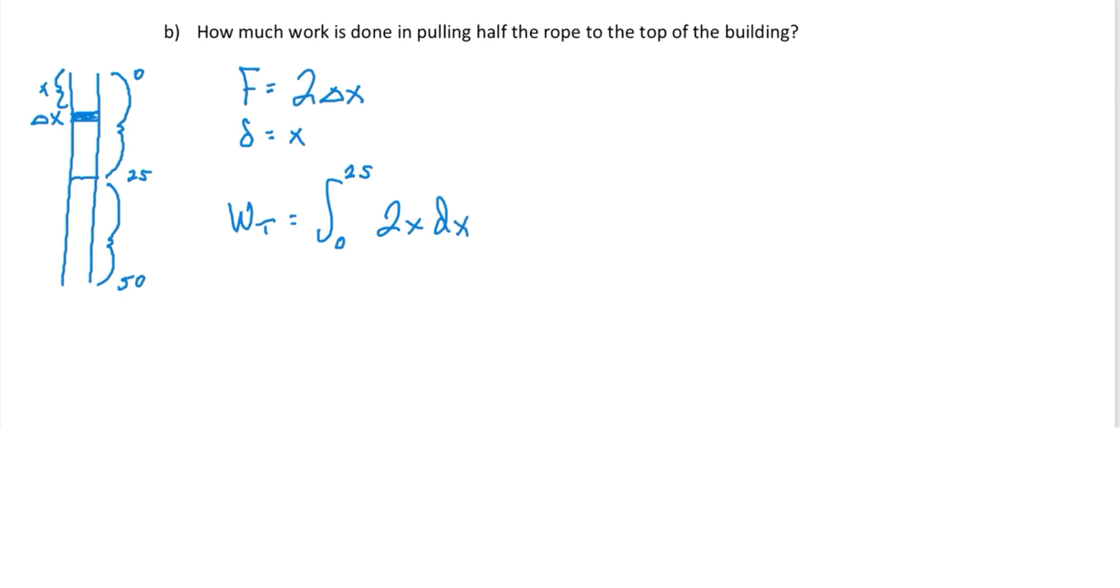Now the bottom is where it gets a little different. Let's focus on one slice of the bottom. It's still delta x. The force on that slice is still 2 pounds per foot, so 2 delta x. But what's changing here is the displacement. We don't want the displacement to be x in this case, because this slice is not going the full length to the top of the building. It's not moving all the way x units or x feet. It's only moving half the length of the rope, in this case 25 feet. So the displacement for the bottom part is 25.